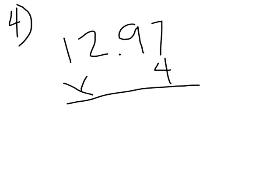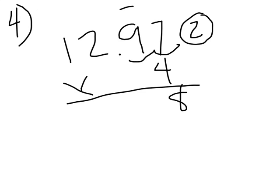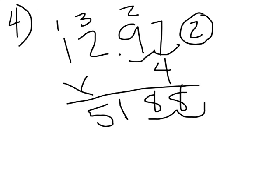Now you try a problem on your own. How many numbers should be behind the decimal in this problem? 1, 2. Go ahead and write the product of 12 and 97 hundredths times 4. Make sure that you correctly place your decimal. Let's see how you did. 4 times 7 is 28. 4 times 9 is 36, plus 2 is 38. 4 times 2 is 8, plus 3 is 11. 4 times 1 is 4, plus 1 more is 5. There are 1, 2 numbers behind the decimal. So the answer is 51 and 88 hundredths.